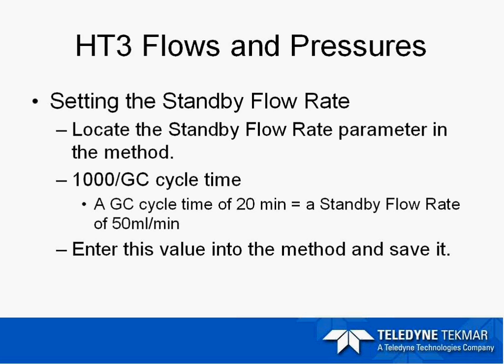Typically, if you're using the same gas tank for your GC and your HT3, set the tank pressure at 80 PSI. Standby flow is very easily set in the method of the HT3 and can be changed depending on the HT3 and GC method run. If you have multiple methods based on different operating conditions, you can change the standby flow rate in the method — you don't have to worry about measuring the gas flow at the needle with gauges like you do on the 7000. Just locate the parameter in the method, change it, and save it. The standby flow rate should be 1000 divided by our GC cycle time to ensure we flush the sample loop between each sample and prevent carryover.